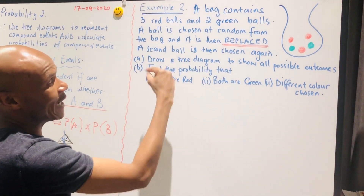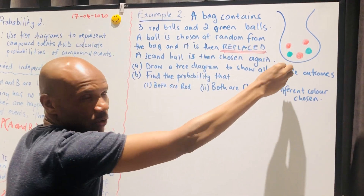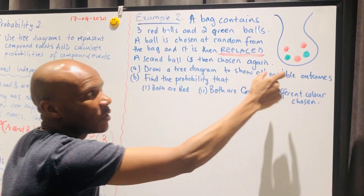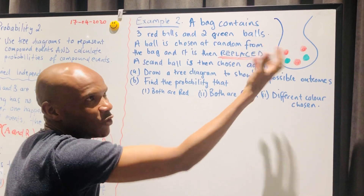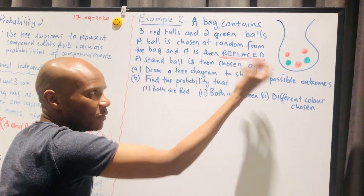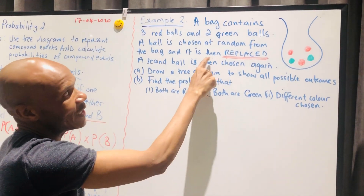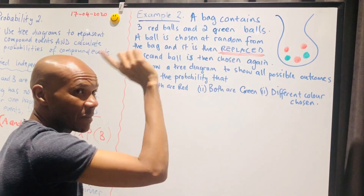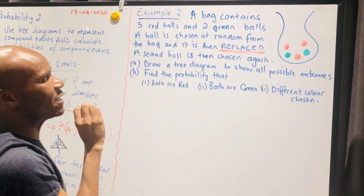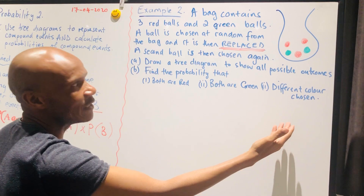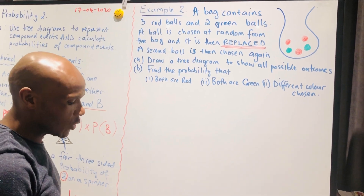The example that we have is: a bag contains three red balls and two green balls. A ball is chosen at random and it is then replaced. Remember, we did an example of not replacing, but now it is replaced and the second ball is then chosen again. So we are going to draw a tree diagram representing this and answer the questions that follow.